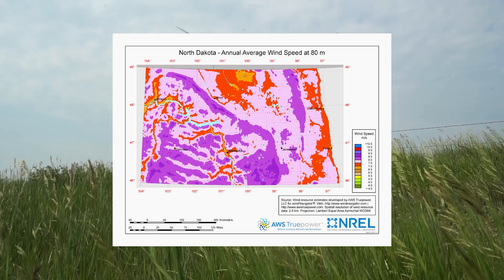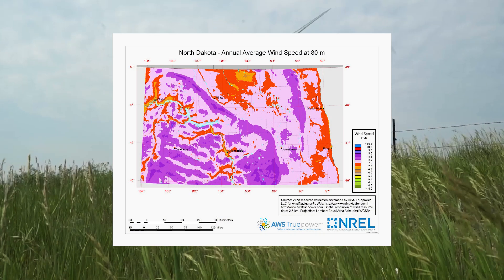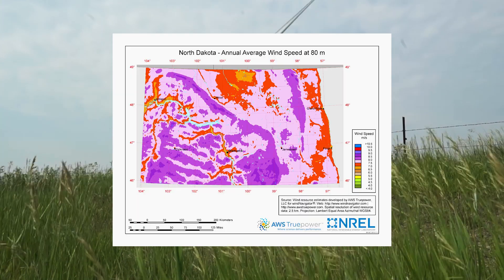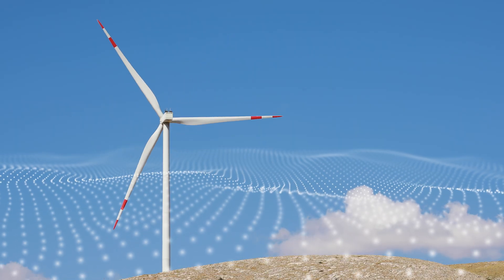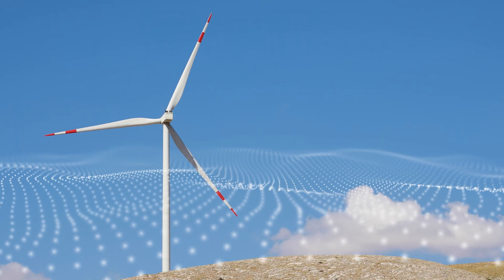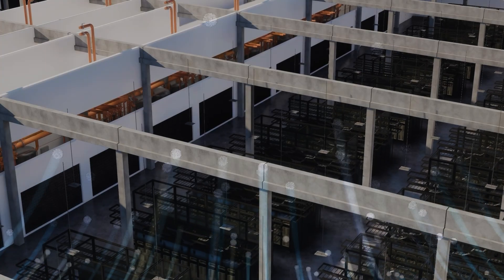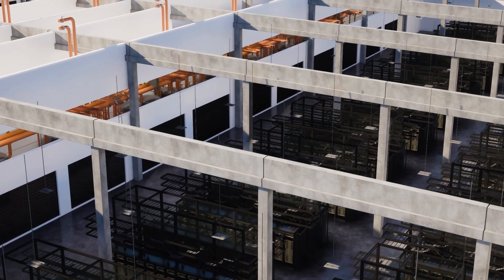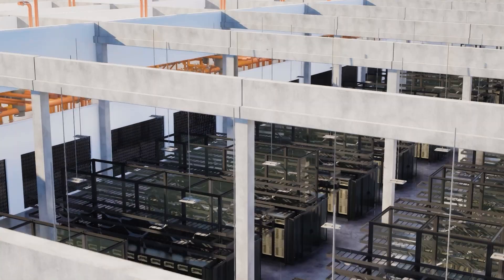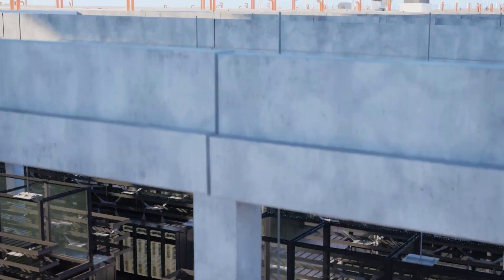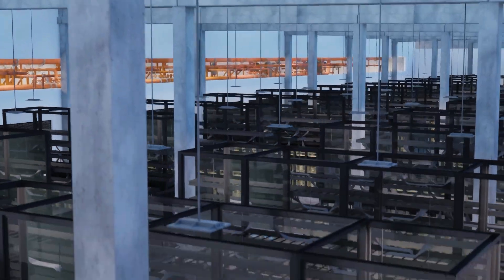If you look at a wind resources map, we've got an abundance of wind. That abundance of wind creates a situation called stranded power. That stranded power is then utilized by the data center. Instead of creating congestion, we actually create grid stability by consuming that power.